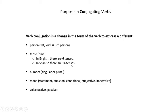In Spanish, there are 14 tenses. Conjugation is also used to express a number, either singular or plural. It's also used to express mood — that is, to express a statement, a question, a conditional statement, a subjective statement, or an imperative statement. And conjugation is also used to express voice, either active or passive. In this module, we're just going to be discussing the first three: person, tense, and number. Mood and voice will be discussed in other modules.